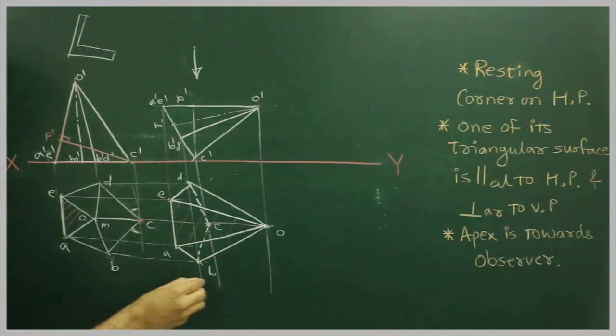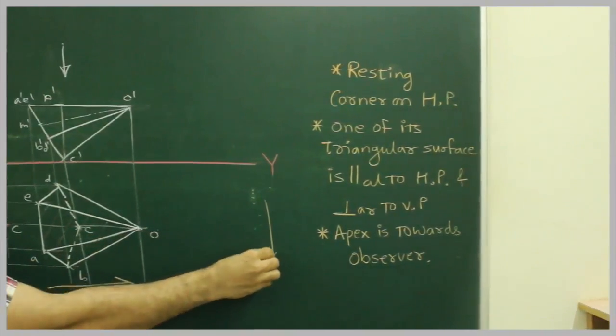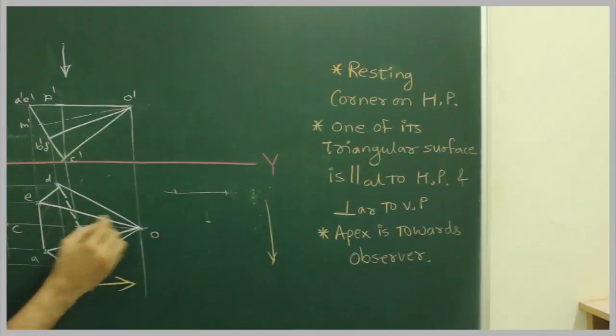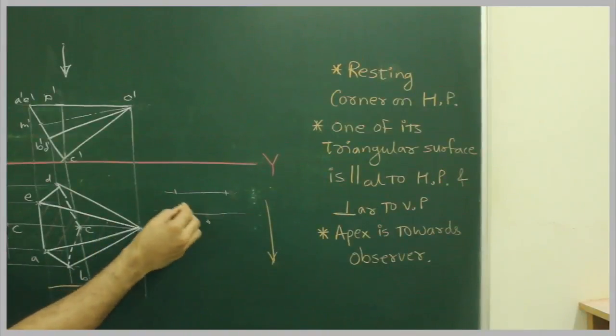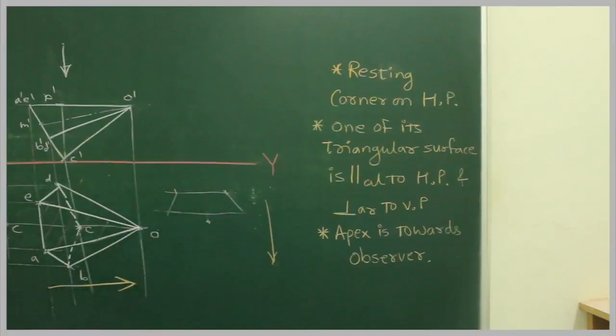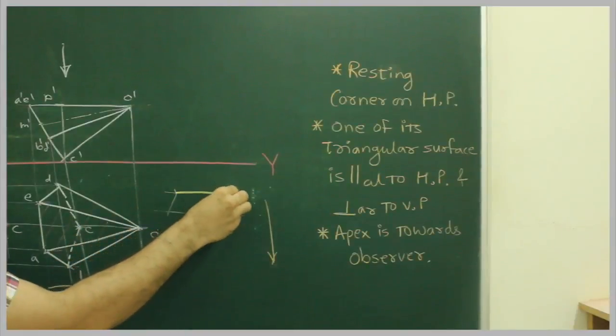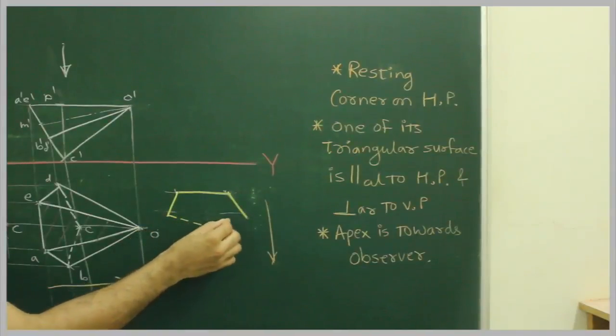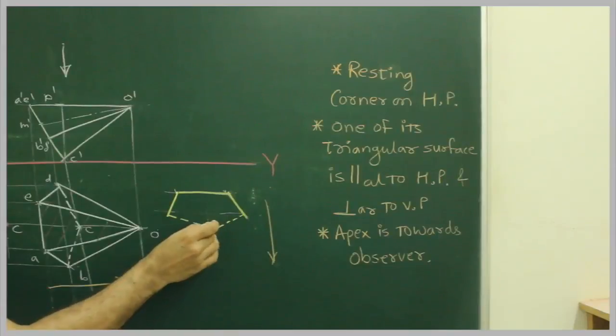But now they want apex towards the observer. So what we will do, this diagram we will rotate. It is in O downward. You can draw this again, so we have to draw this again.